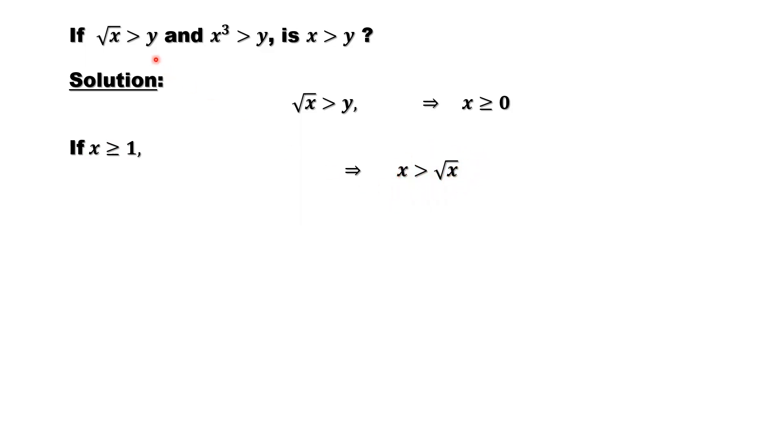So we continue to use this given information. We can see the square root of x is bigger than y. This implies x is bigger than square root of x. Square root of x is bigger than y. So from this part, we have the conclusion: x must be bigger than y. We have done the first situation when x is bigger than or equal to 1.